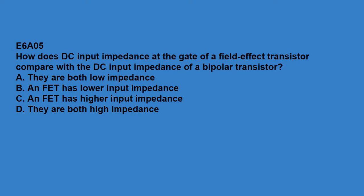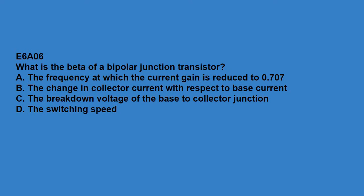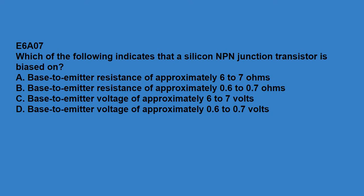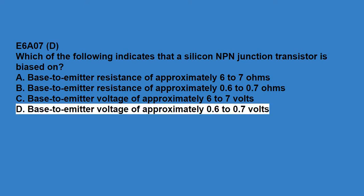E6A05: how does DC input impedance at the gate of a field-effect transistor compare with the DC input impedance of a bipolar transistor? An FET has higher input impedance. E6A06: what is the beta of a bipolar junction transistor? The change in collector current with respect to the base current. E6A07: which of the following indicates that a silicon NPN junction transistor is biased on? Base to emitter voltage at approximately 0.6 to 0.7 volts.